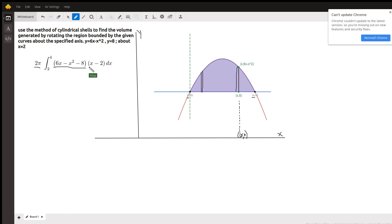The height of the shell is this distance right here, and for every x in the interval from 2 to 4, this distance from the x-axis all the way up to here is 6x minus x squared.